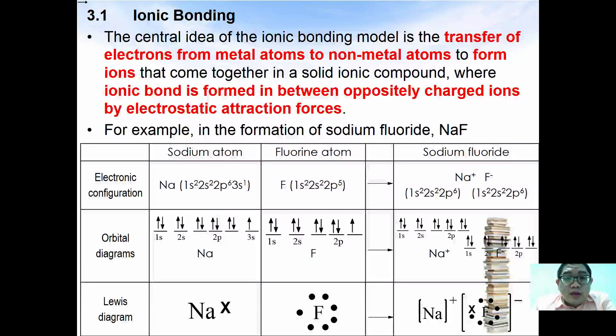The central idea of the ionic bonding model is the transfer of electrons from metal atoms to non-metal atoms to form ions that come together in a solid ionic compound, where ionic bond is formed between oppositely charged ions by electrostatic attraction forces. For example, in the formation of sodium fluoride NaF, sodium atom has the electronic configuration 1s² 2s² 2p⁶ 3s¹ while fluorine atom has the electronic configuration 1s² 2s² 2p⁵.